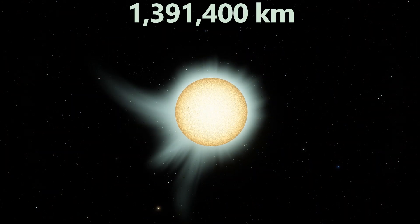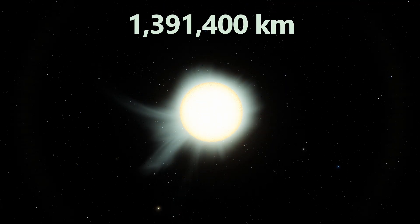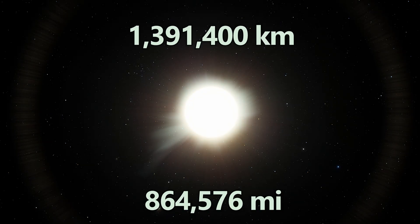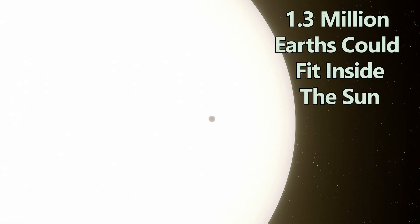The Sun measures about 1,391,400 kilometers across, or about 864,576 miles. More than a million Earths could fit inside the Sun.